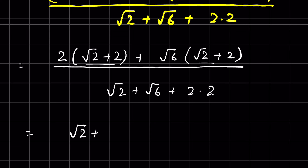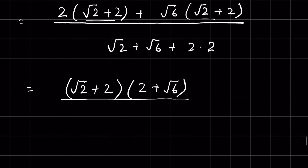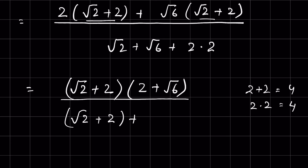Now these two terms are common: square root of 2 plus 2, times 2 plus square root of 6. Two factors we have in the numerator. Now we know if we add 2 plus 2 it is 4, and if we multiply 2 times 2 it is also 4. So in the denominator we can write square root of 2 plus 2; this 2 times 2 we can write as 2 plus 2. So square root of 2 plus 2 we can take common, plus square root of 6 plus 2.